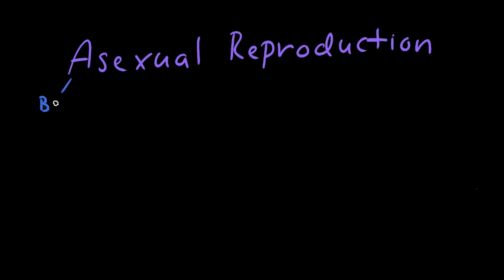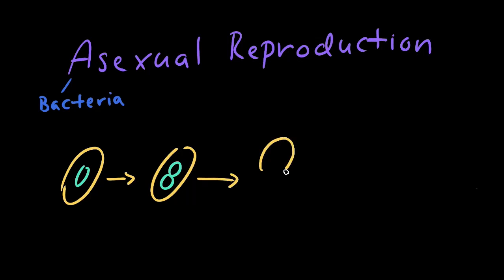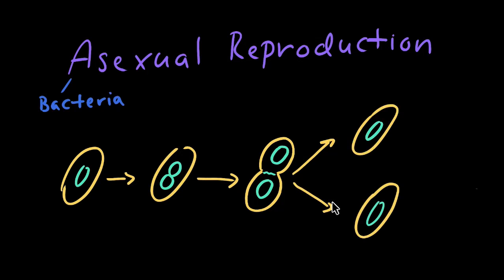An example of asexual reproduction in microorganisms can be seen in bacteria, due to their use of a specific type of asexual reproduction called binary fission. During this process, a single bacteria cell grows, copies its genes, and divides into two identical cells — kind of like a copy machine.